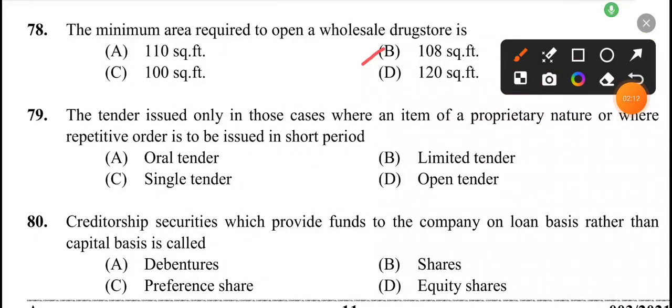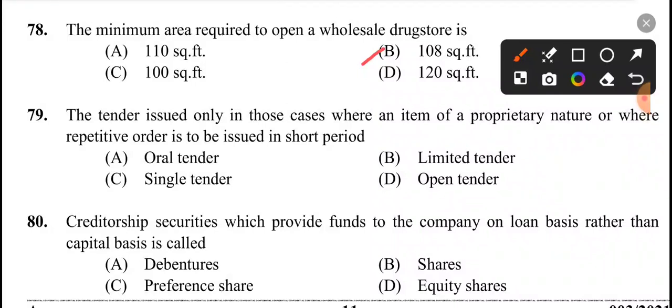Next question: the tender issued only in those cases where an item is of a proprietary nature or where a repetitive order is to be issued in a short period. The answer is option C, single tender.